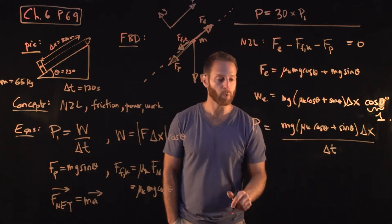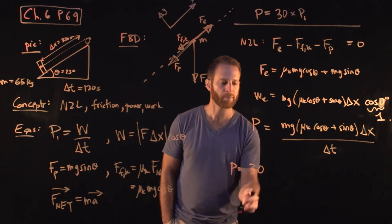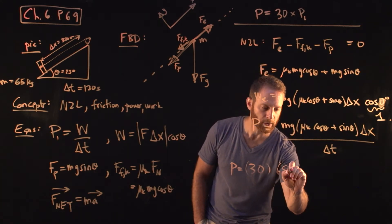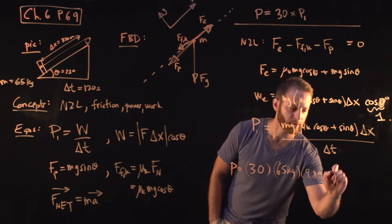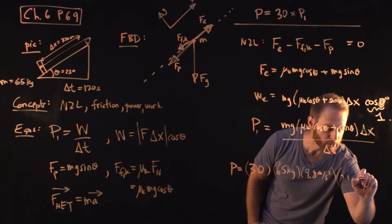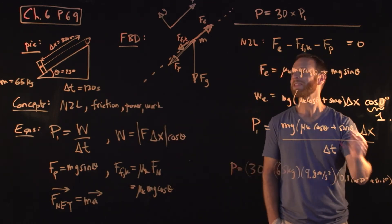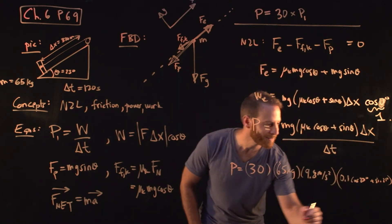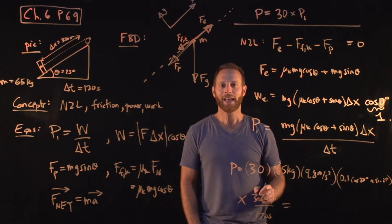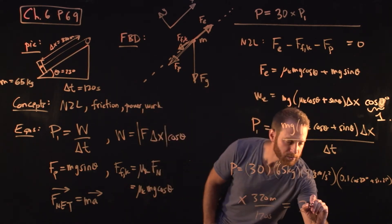Finally, to get the answer that we want, it's going to be this quantity times 30. So when we put that all together, I'll write in the numbers just so you can see where everything came from. The 30 people times the mg, which is the 65 kilograms, times the g, which is 9.8 meters per second squared. The mu k is 0.1, the cosine of the angle, 23 degrees, cosine 23 degrees, plus the sine of 23 degrees. Multiply that by 320 meters, divided by 120 seconds. If you put everything together, you'll find that this is approximately 24,600 watts.